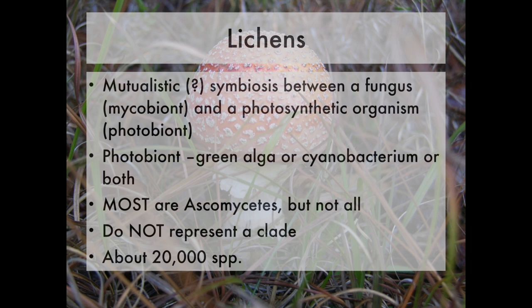Lichens are mutualistic symbioses between a fungus called the mycobiont and a photosynthetic organism called the photobiont. And unlike mycorrhizas, which are also mutualisms between fungi and a photosynthetic partner, the photosynthetic partner in lichens is either green algae or cyanobacteria, or sometimes both can be involved.